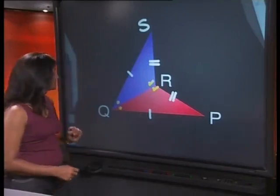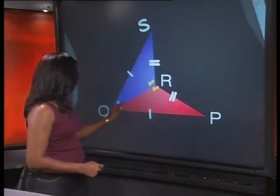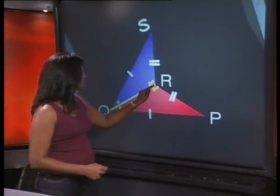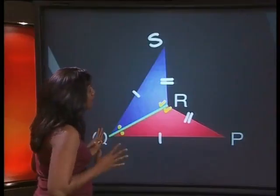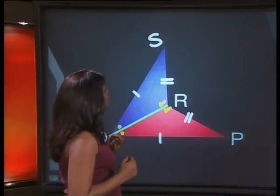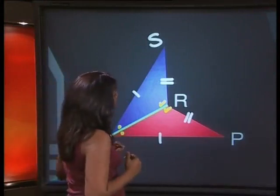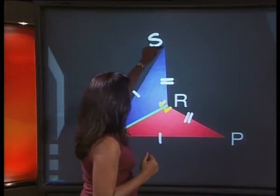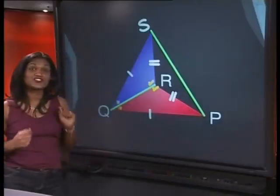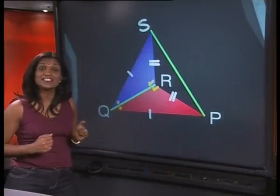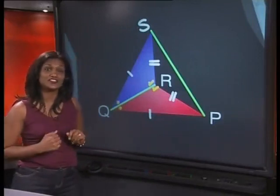Now, we know that our first diagonal was drawn from Q to R like this. Now, where in the shape would our second diagonal be drawn? Remember, this diagonal must be drawn to two non-consecutive points. That would be from S to P. So, just as we suspected, the second diagonal lies on the outside of our shape.